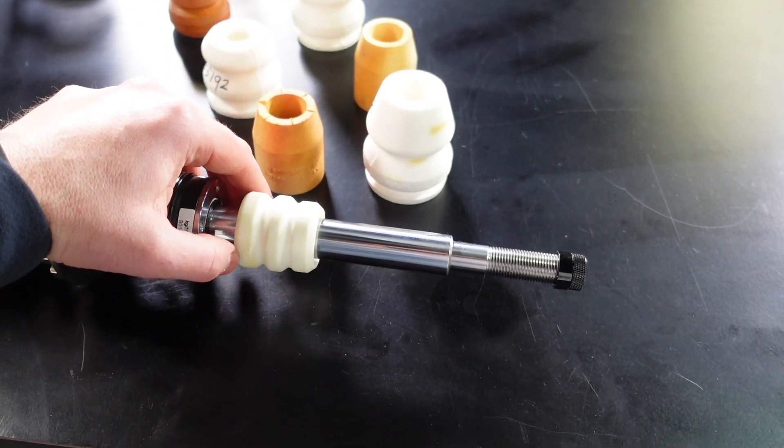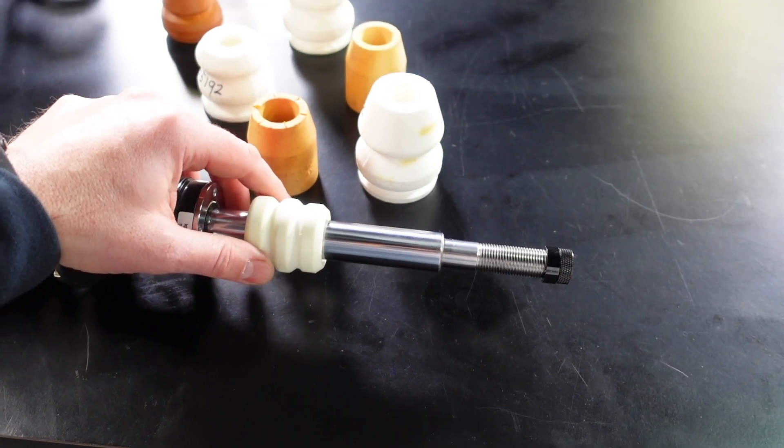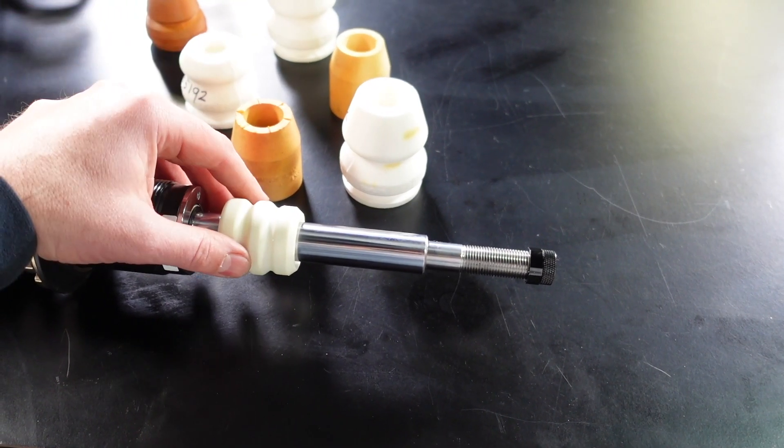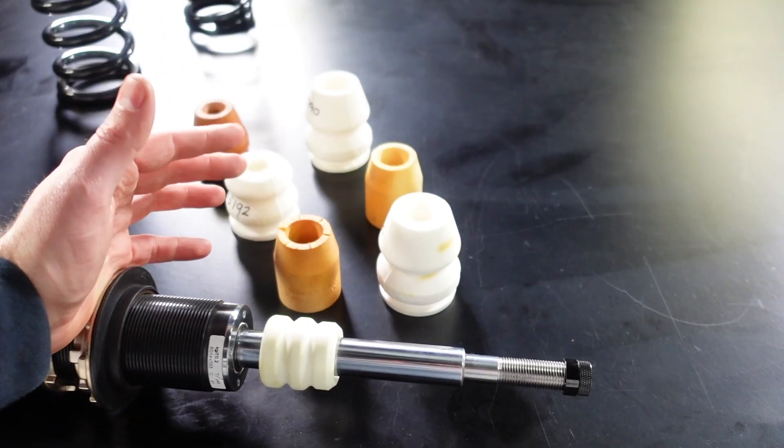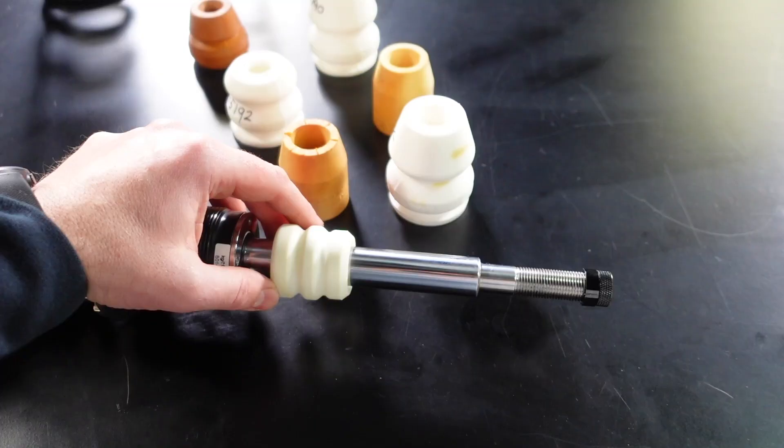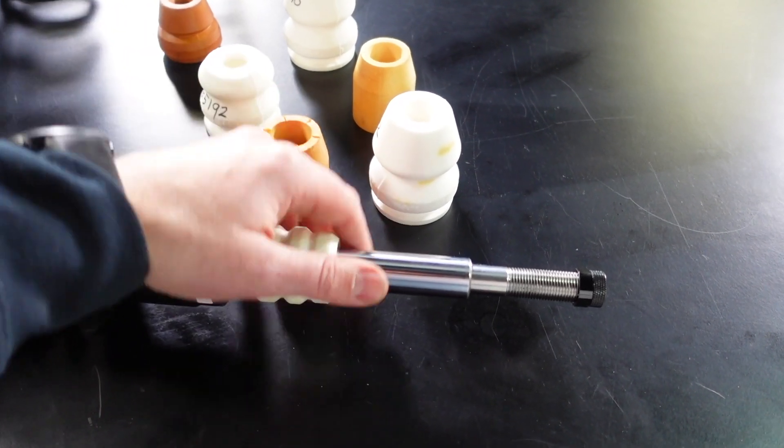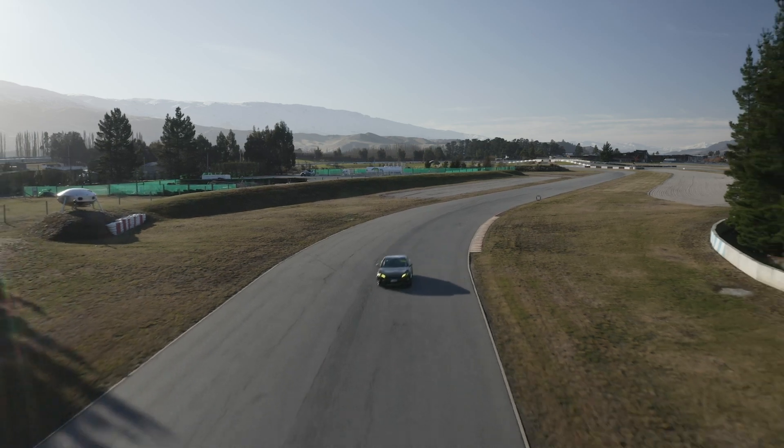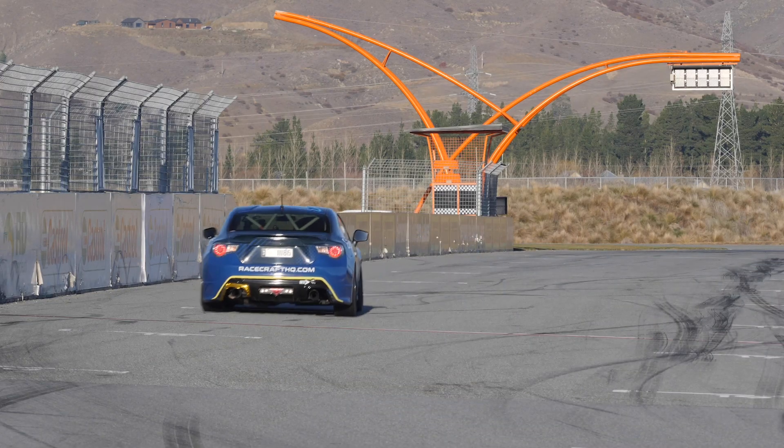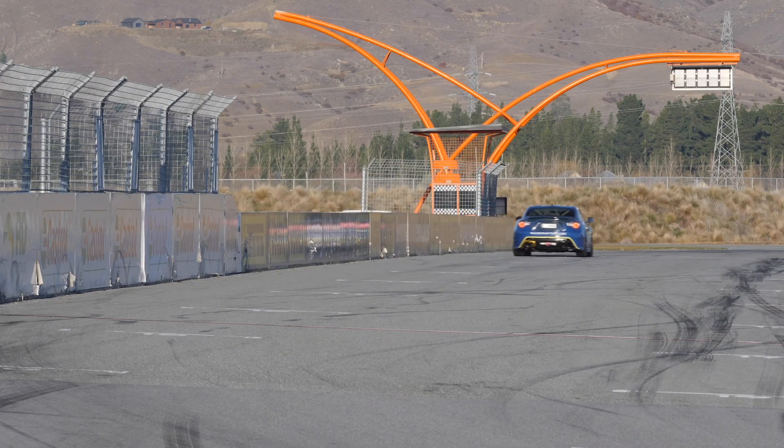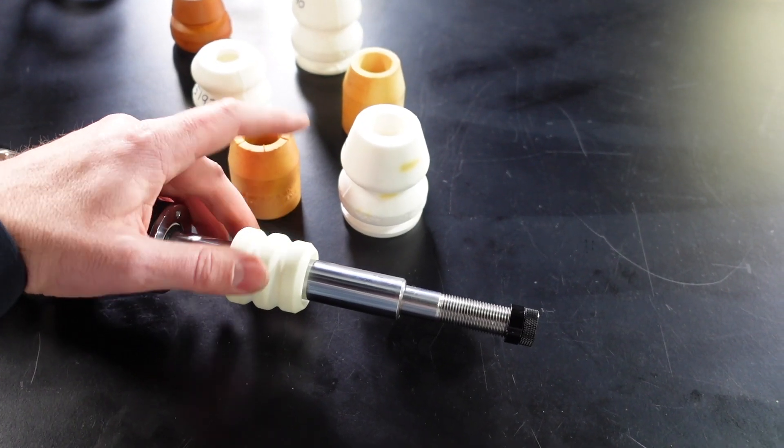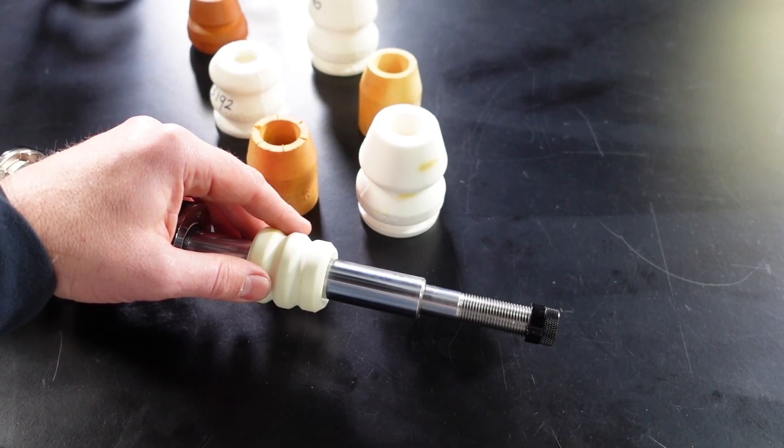One of the simplest things you're usually using the bump stops to control is to just stop mechanical component clashes. So in a motorsport application where you may have large tyres or you're running particularly low ride height, one of the things you're often trying to stop is contact between the tyres and the fenders or the inner guard and the wheel well.